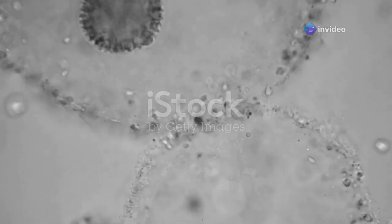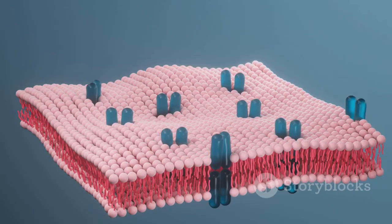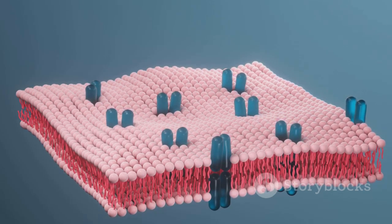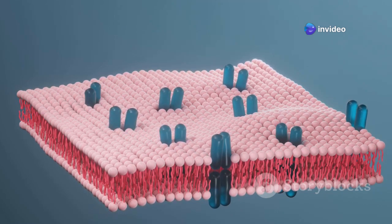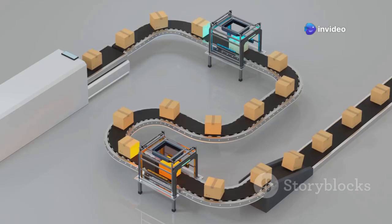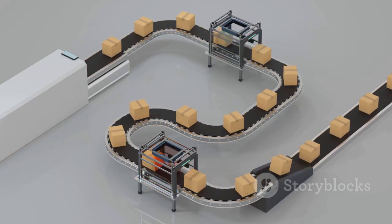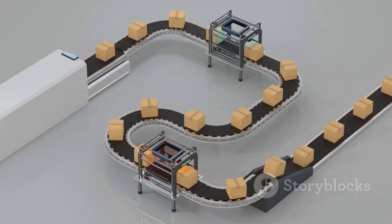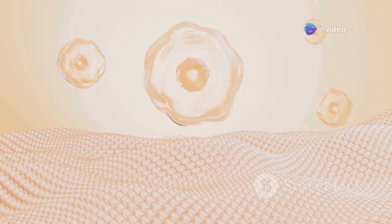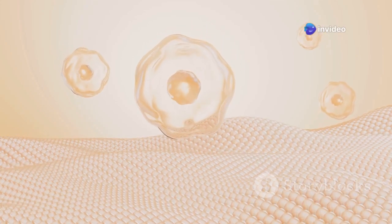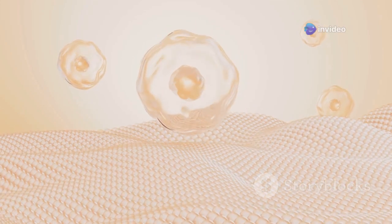Get ready to explore the Golgi apparatus, the cell's very own post office. This organelle modifies, sorts, and packages proteins and lipids, acting like a cellular distribution center. Think of it like a well-organized warehouse where proteins are tagged, packaged, and shipped to their final destinations within the cell or even outside of it. The Golgi apparatus ensures that the right molecules get to the right place at the right time, keeping the cell running smoothly.